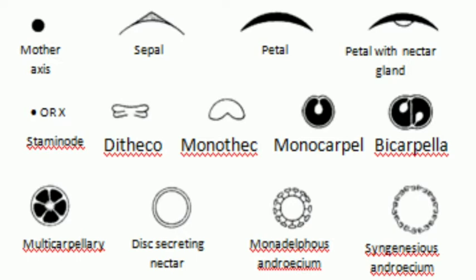Monadelphous — if the stamens are fused to form a single bundle, you can draw a complete line connecting all those anthers. You can see in the diagram there are many anthers around, all connected with a line, meaning they form a single bundle. Those many anthers and filaments are fused to form a single bundle — that is what we call the monadelphous condition. Then syngenesious means the anthers are fused but the filaments are free.